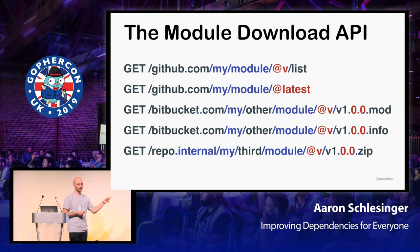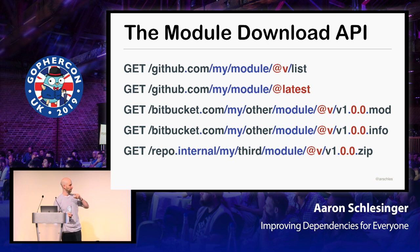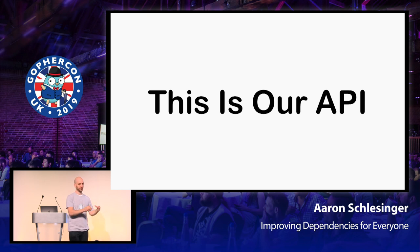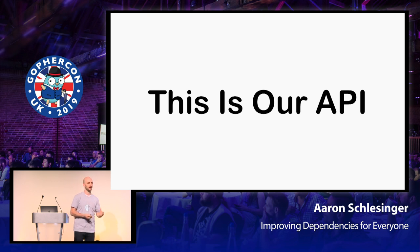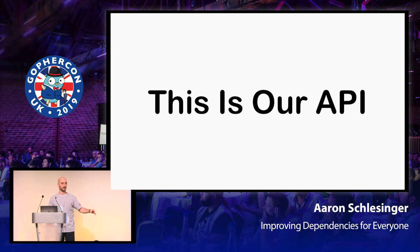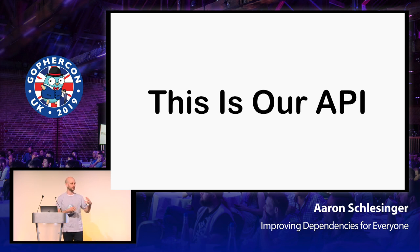You can get metadata about specific module versions — the go.mod file for v1.0.0 of that module — and there's a bit more metadata under the .info endpoint. Then there's the important one: the .zip endpoint. This is a zip file, not a Git tree — frozen in time for the code at v1.0.0. Immutable for that version. This is our API, specifically designed for Go dependencies — the first time we've had an API purpose-built for Go dependencies rather than source control systems.